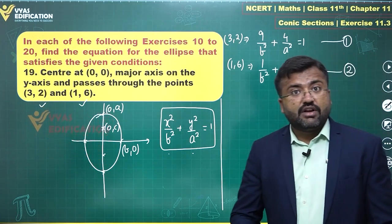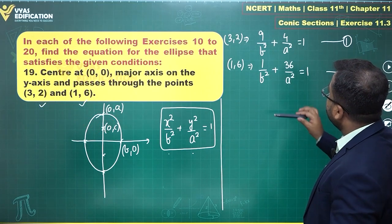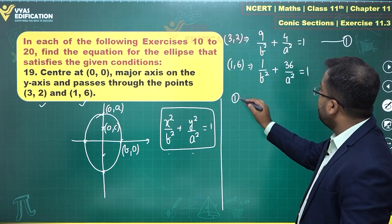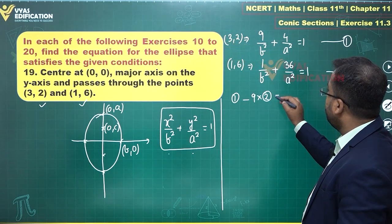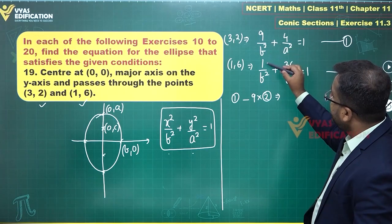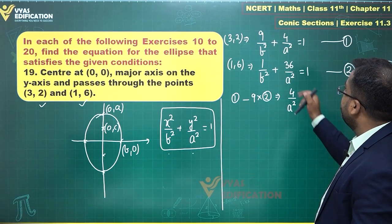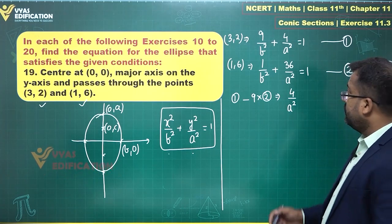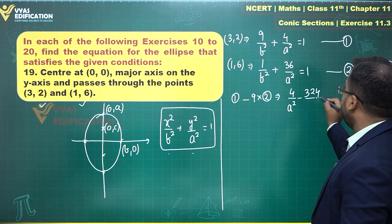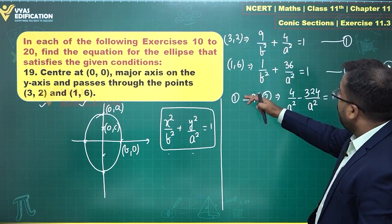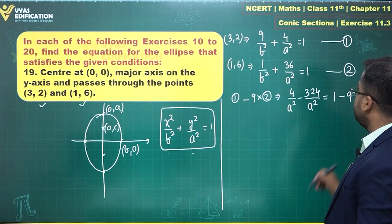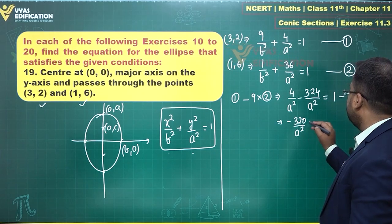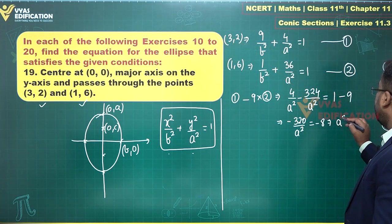Now we are supposed to solve for a² and b² with the help of these two equations. Observe carefully — equation 2 can be multiplied by 9 and subtracted to eliminate b². So equation 1 minus 9 times equation 2: the b² terms cancel, giving 4 upon a² minus 324 upon a² equals 1 minus 9, which simplifies to minus 320 upon a² equals minus 8.